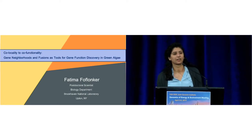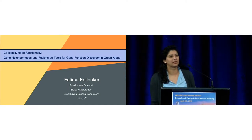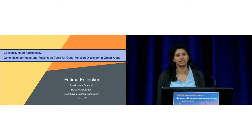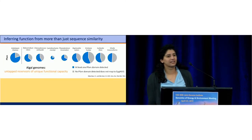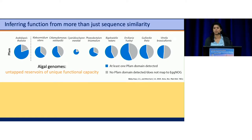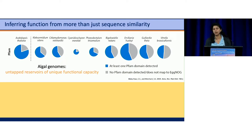Good afternoon. Today I'll be talking about using physical gene proximity to predict gene function in green algae. Algae are distantly related to most characterized proteins from model organisms, making sequence similarity-based approaches alone unreliable. For example, between a quarter and a half of an algal genome may have no sequence similarity at all to proteins in the PFAM domain database.